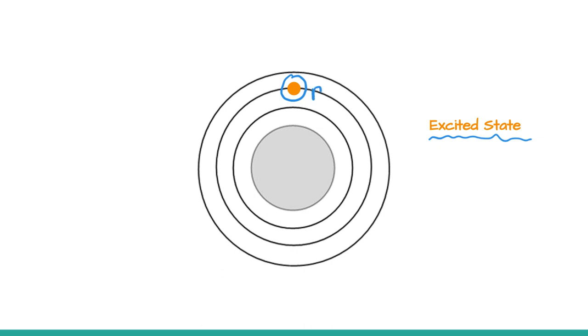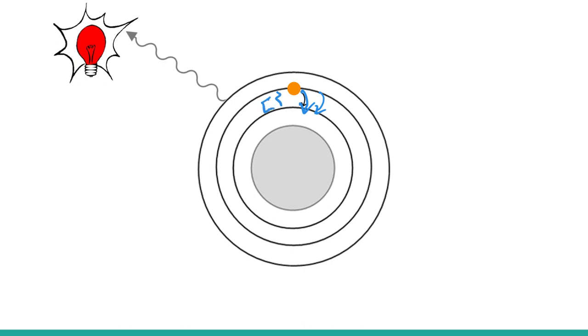This one we're depicting has jumped up to the second energy level. Now this is very unstable, so electrons do not want to be in this configuration and will quickly return to their ground state. When they return to their ground state, they release energy. This transition from n equals two to n equals one will give off a photon of light associated with a particular color because it has a particular amount of energy.